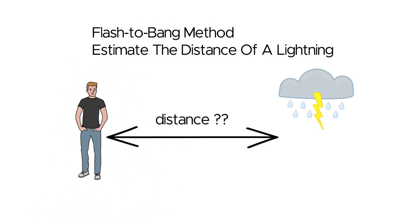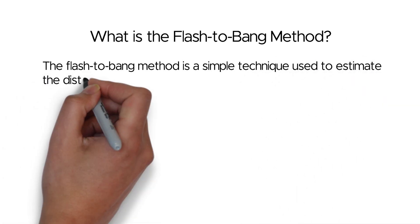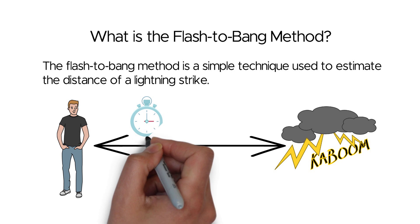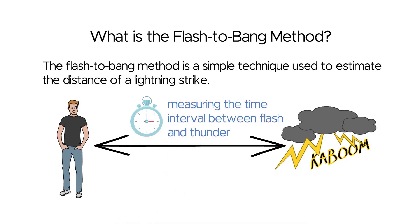How to Estimate the Distance of a Lightning. The flash-to-bang method is a simple technique used to estimate the distance of a lightning strike by measuring the time interval between seeing the lightning flash and hearing the associated thunder. Let's break down the flash-to-bang method step by step.